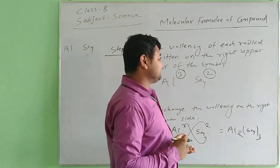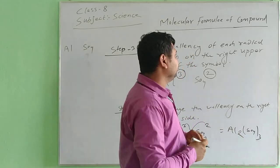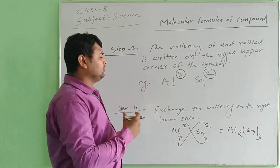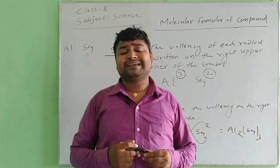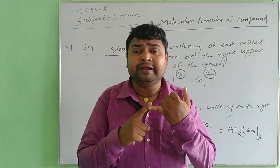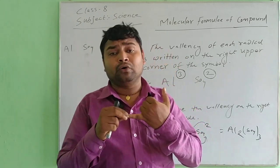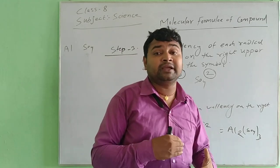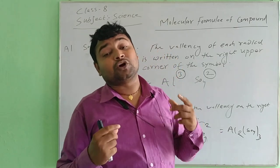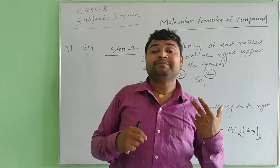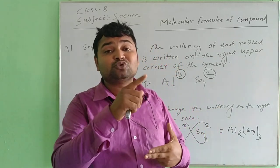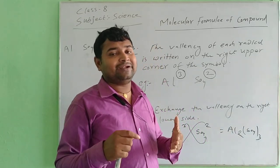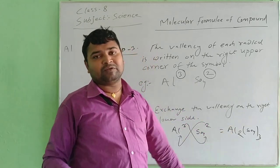Once again, let's review the steps. Step number one: write the name of the compound. Step number two: write the symbol. Step number three: write the valency at the top of the symbol. Step number four: exchange the valency with each other and write the final formula. This is how we find and write the molecular formula. Thank you.